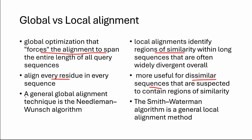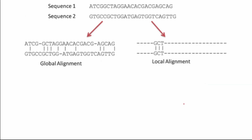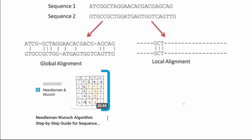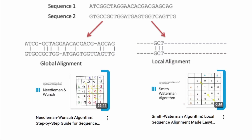A general technique for global alignment is the Needleman-Wunsch algorithm, while for local sequence alignment it is the Smith-Waterman algorithm. I have made separate videos on both of these algorithms, and I encourage you to watch them as they will clear all of your doubts.